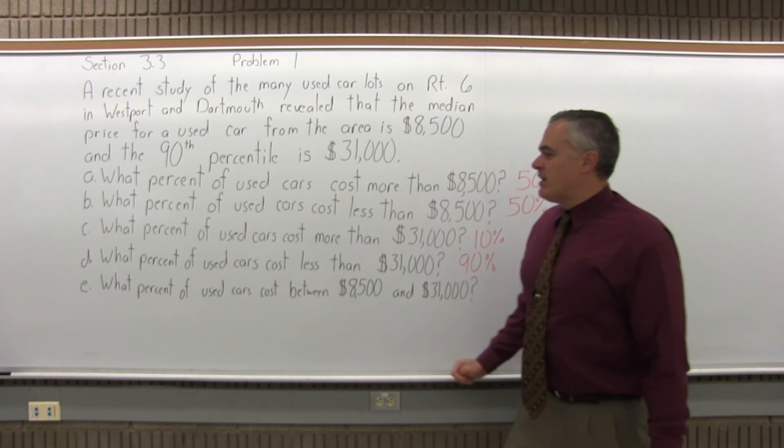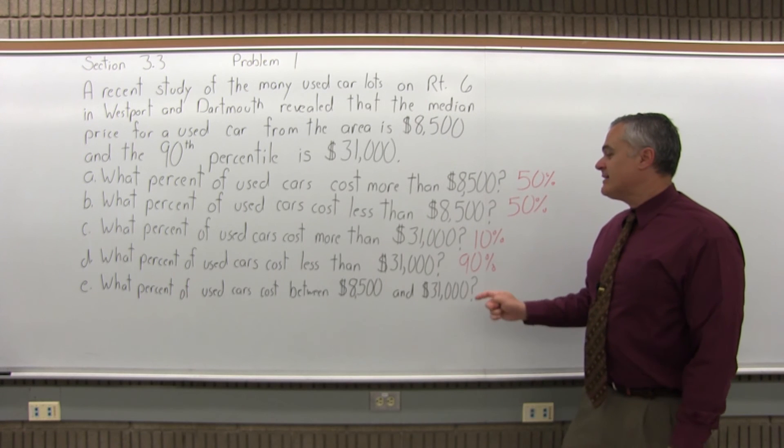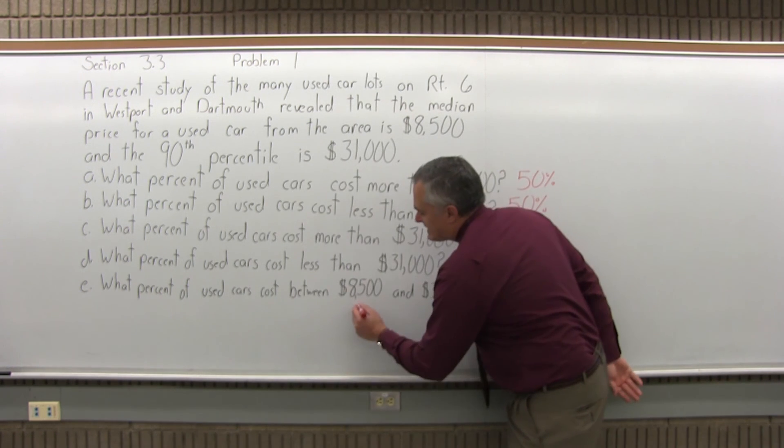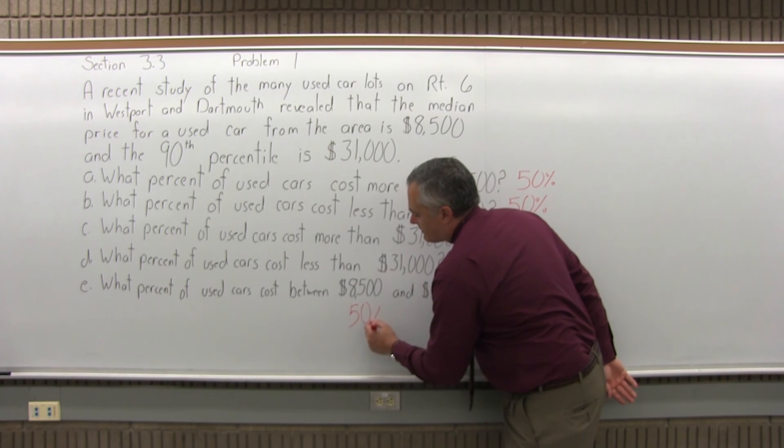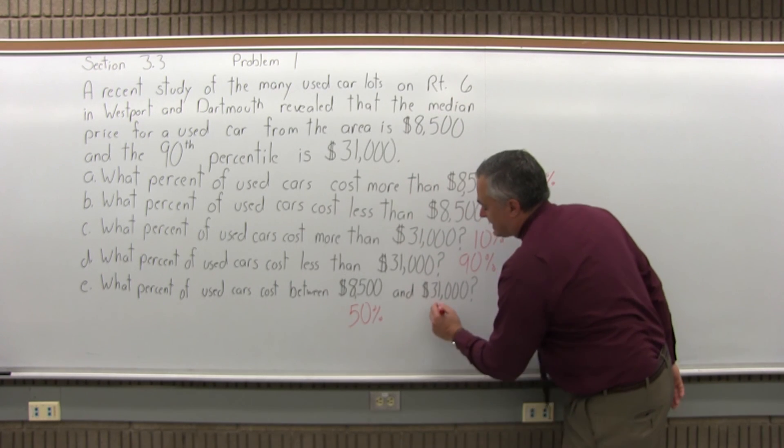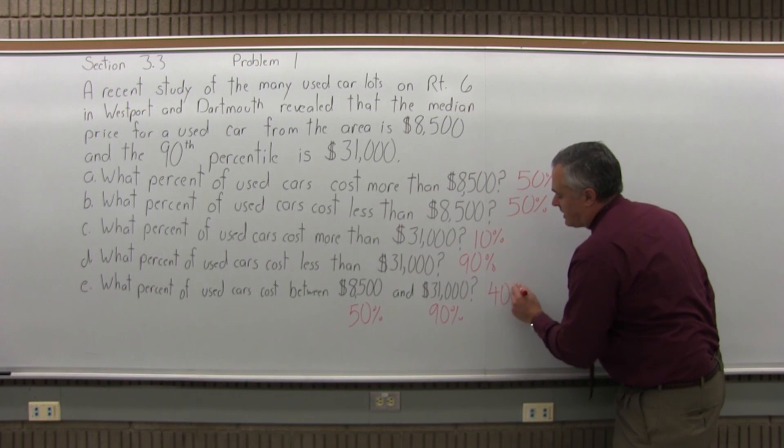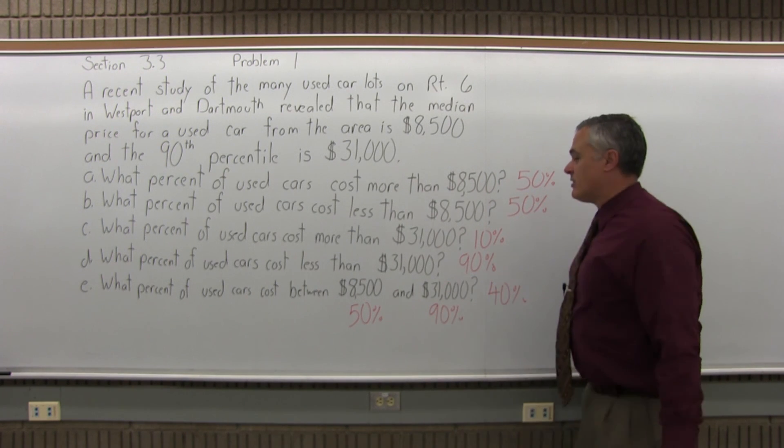And finally Part E, what percent of used cars cost between $8,500 and $31,000? Well, what percent would be between 50 percent and 90 percent is what that amounts to, and that would be 40 percent. And 40 percent of the cars cost between $8,500 and $31,000.